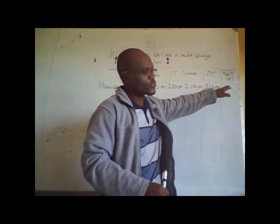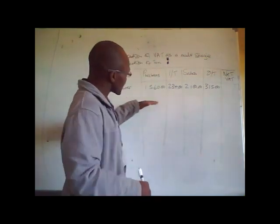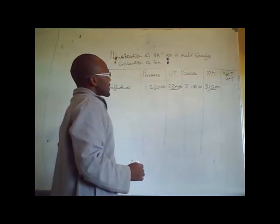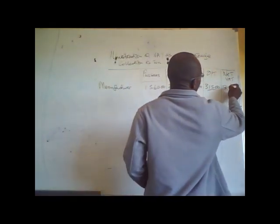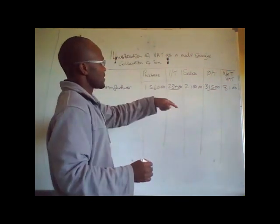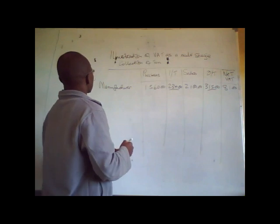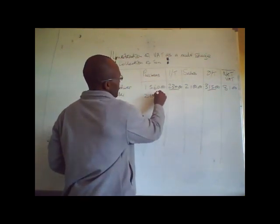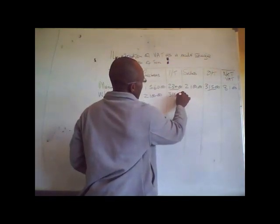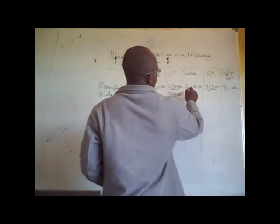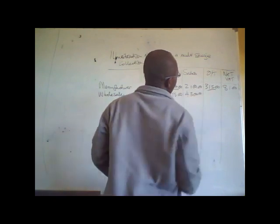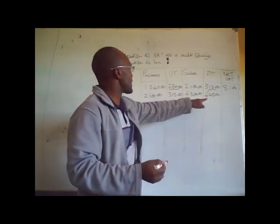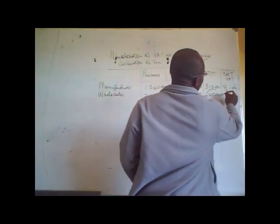So how much is paid to Zimra when the manufacturer has completed this transaction? The output tax of $315 less the input tax of $234 gives $81. So the manufacturer remits $81 to Zimra after selling the commodity. Then we have a wholesaler who pays the $2,100 plus $315 tax. Let's assume the wholesaler is selling at $4,300, attracting a VAT of $645. So the net VAT paid to Zimra is $645 minus $315, which gives $330.